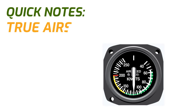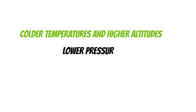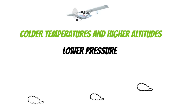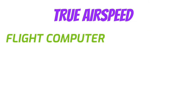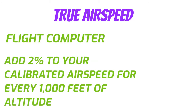True airspeed is calibrated airspeed that's adjusted for altitude and temperature. At colder temperatures and higher altitudes, there's less pressure, which affects our airspeed indicator because it uses pressure to tell us how fast we're going. The most accurate way to get your true airspeed is to use a flight computer, but a quick way is to add 2% to your calibrated airspeed for every 1,000 feet of altitude.